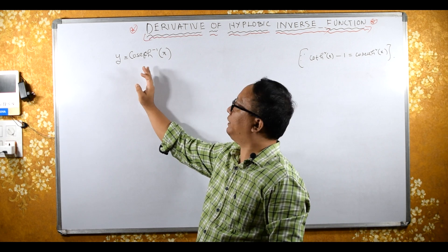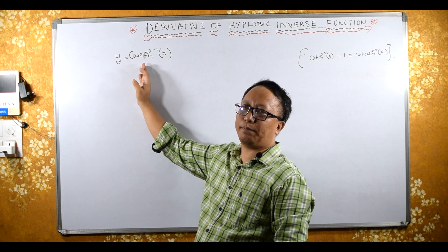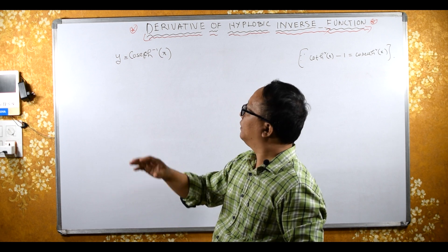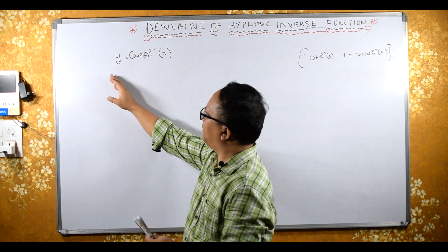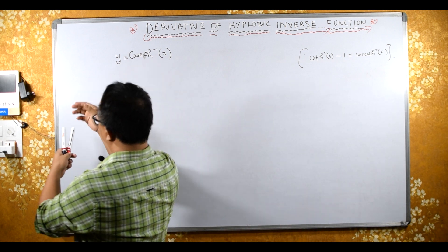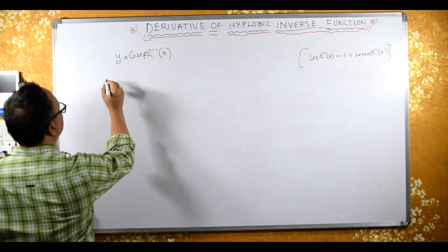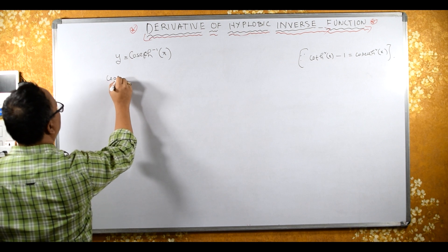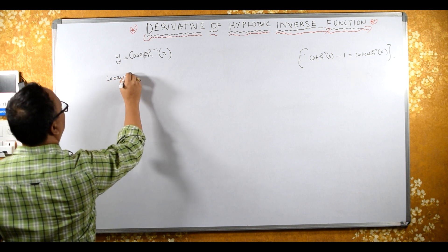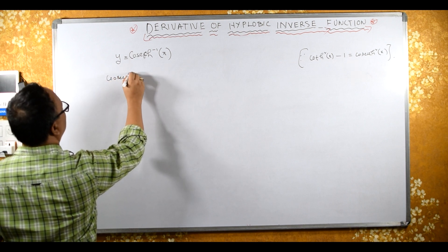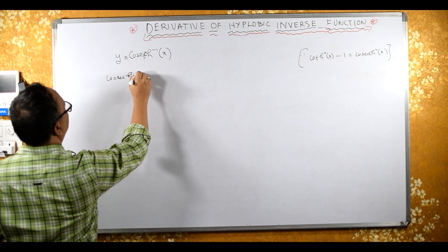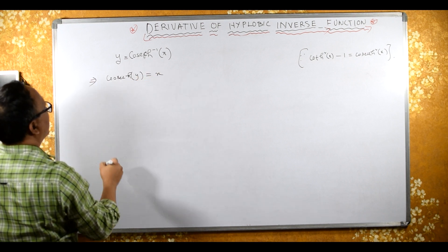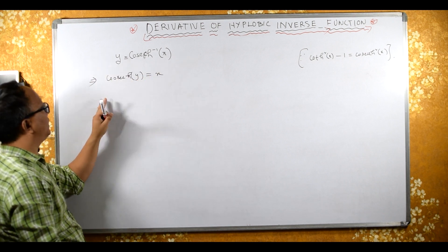We need to find the derivative of cosec hyperbolic inverse x. This is the same as if we rewrite it as: cosec hyperbolic y is equal to x, where y = cosec hyperbolic inverse x. These two expressions are equivalent.